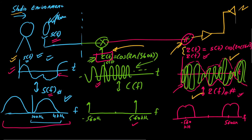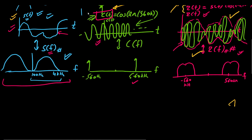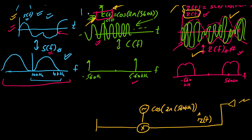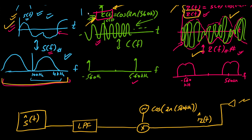On the receiver side you have the exact opposite process. Again you have an antenna and the transmitted signal is received — let us call it Z_hat(T), because there would be some noise involved. This signal is modulated again with a multiplication by an oscillator operating at cos(2π · 560 kHz). After that we use a low pass filter, because we are interested in frequencies not more than 4 kHz, and then we find S_hat(T) — an estimate of the original signal — which is put on a speaker in vehicles.